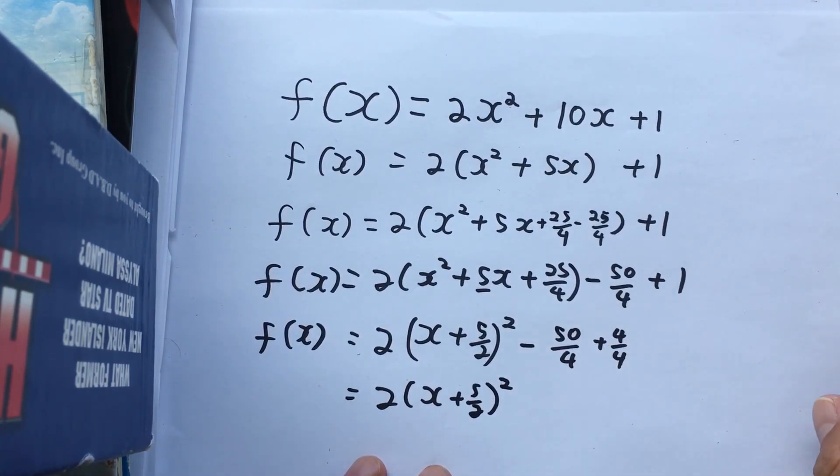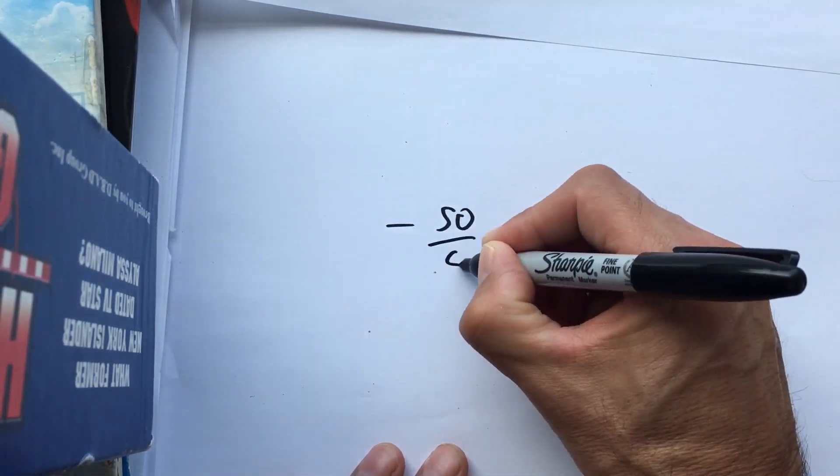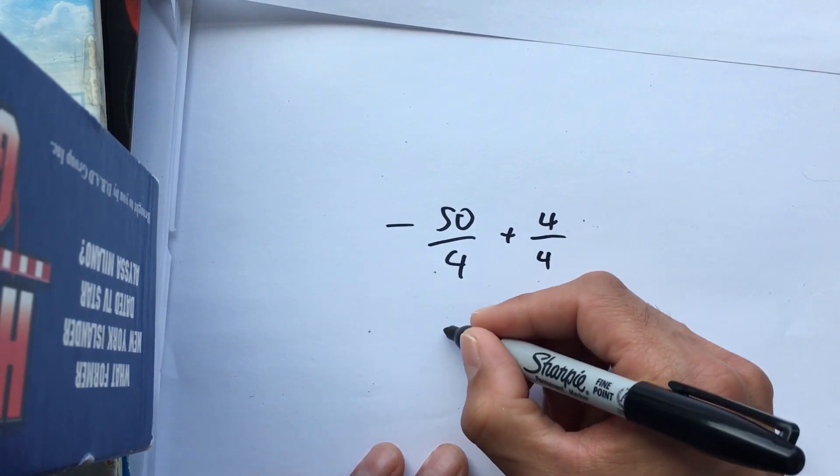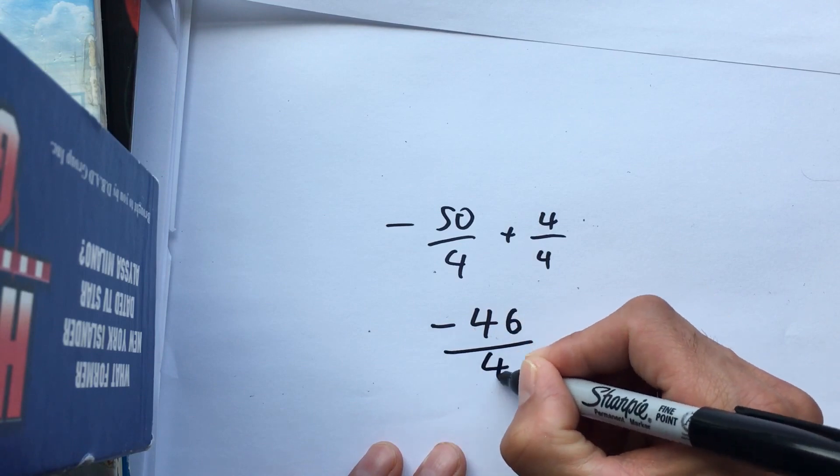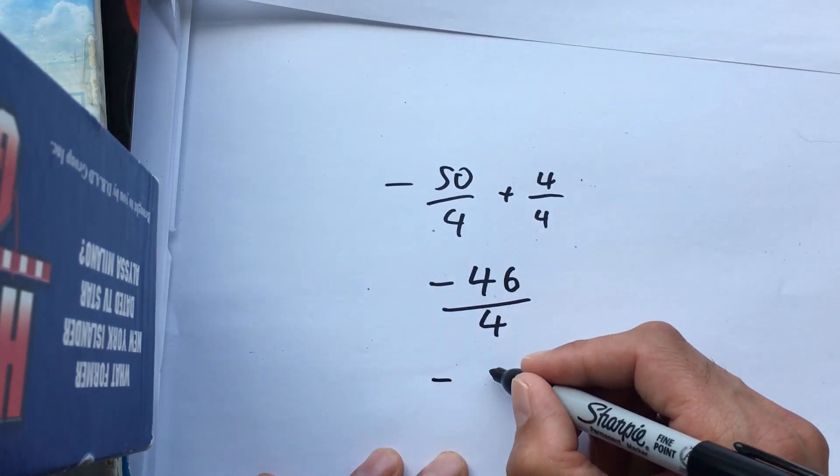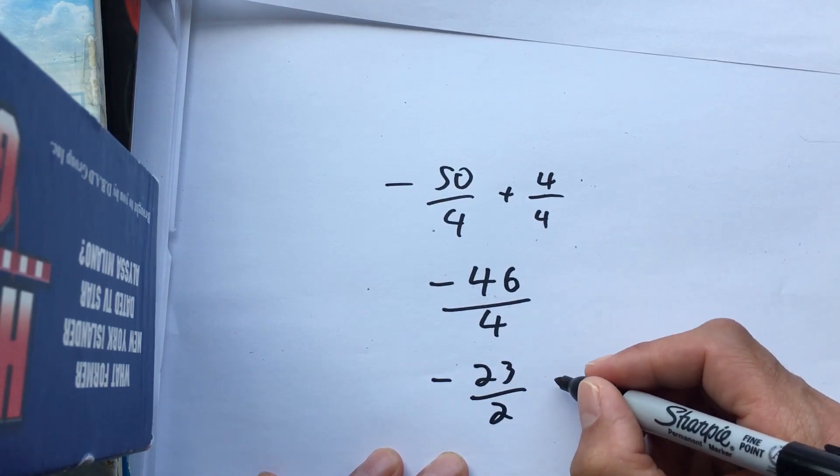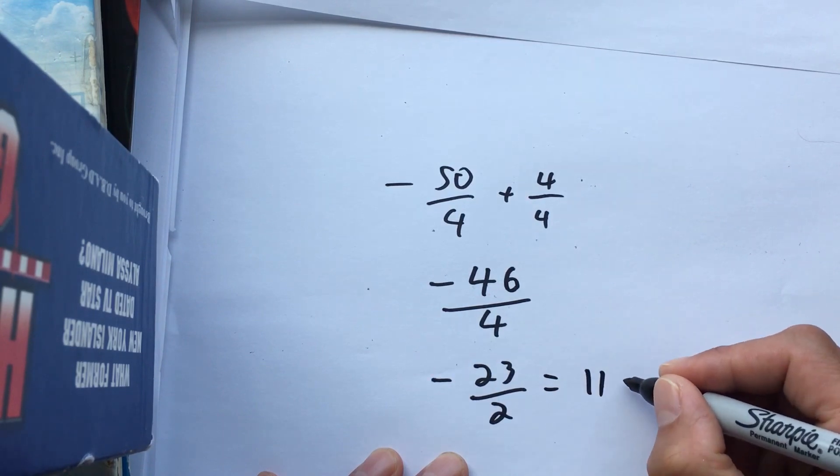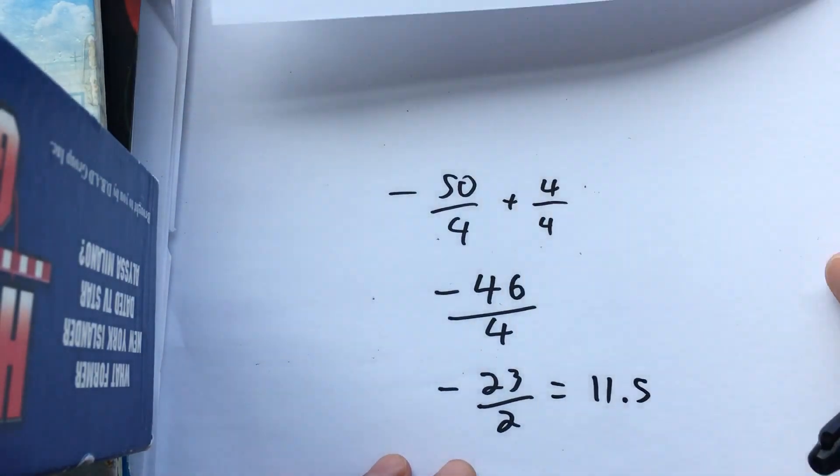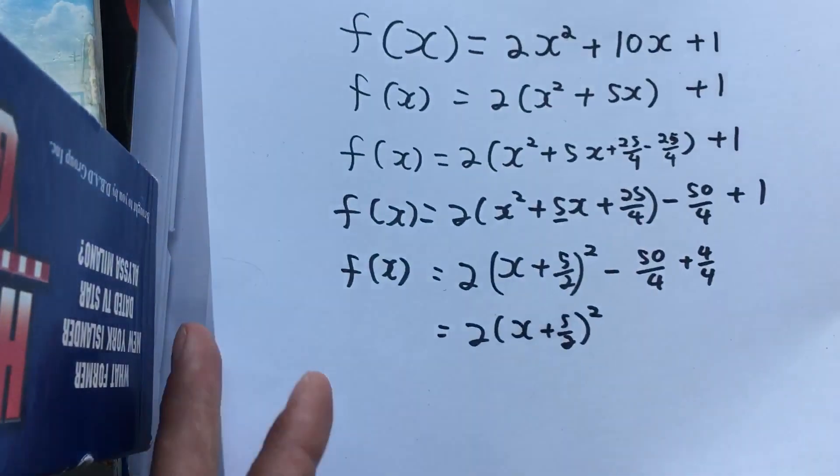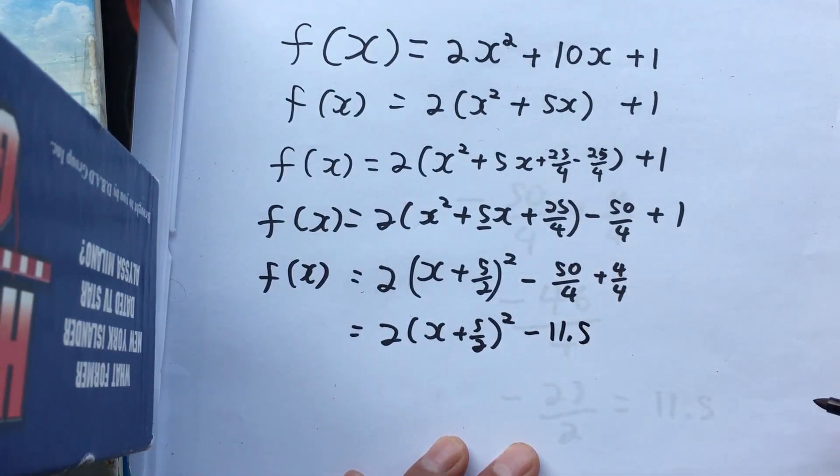And then I'm going to simplify this aside, minus 50 plus 4 over 4, which is minus 23 over 2, or 11 and a half. So there you have it.